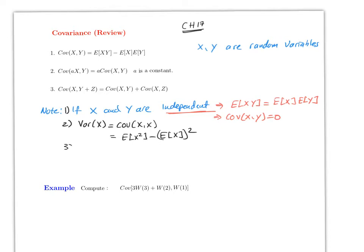One last note: if you want to find the variance of two random variables, for example Var(X+Y), this equals Var(X) plus Var(Y) plus the covariance of X and Y. Remember, if the two variables are independent, the covariance will be zero and you will only have Var(X) plus Var(Y).